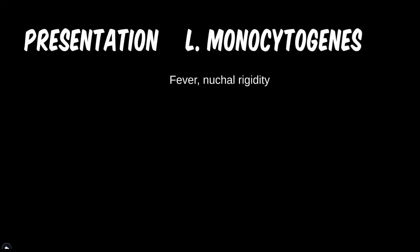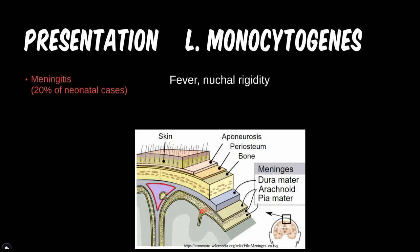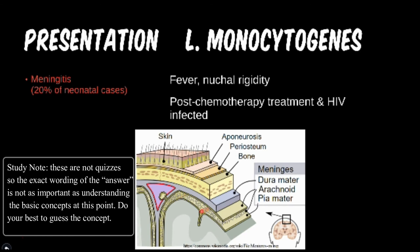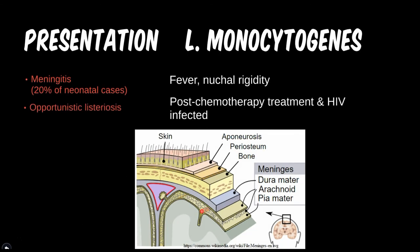For the curved rods, when a patient presents with neck stiffness and is febrile, this is a classic presentation for meningitis. Listeria should be considered any time a neonate shows these symptoms. Don't forget this organism is also opportunistic — it will wait until you're down and then take advantage. Patients with compromised immune systems are more likely to become susceptible to infection with this organism, which is why it's called an opportunistic infection.